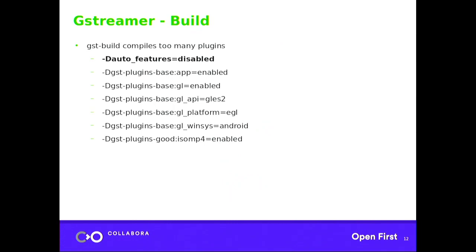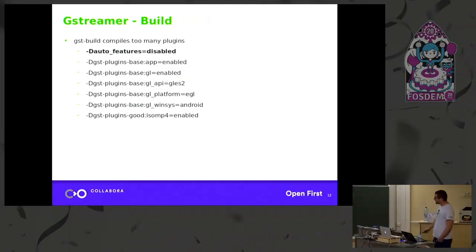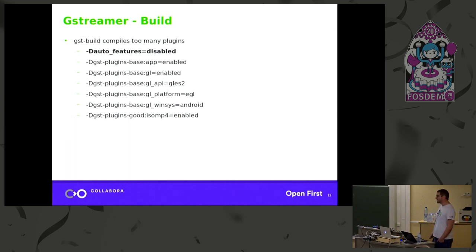With the iconv issue fixed, you can build the full GStreamer — but it does it too well, building more than 100 plugins that you don't need. A nice Meson feature lets you disable all features at once with --auto-features=disabled. With gst-build, that disables every single plugin and builds only the minimal GStreamer core. You then explicitly enable only the exact plugins you want. This cuts the application size from nearly 200 MB down to less than 10 MB.